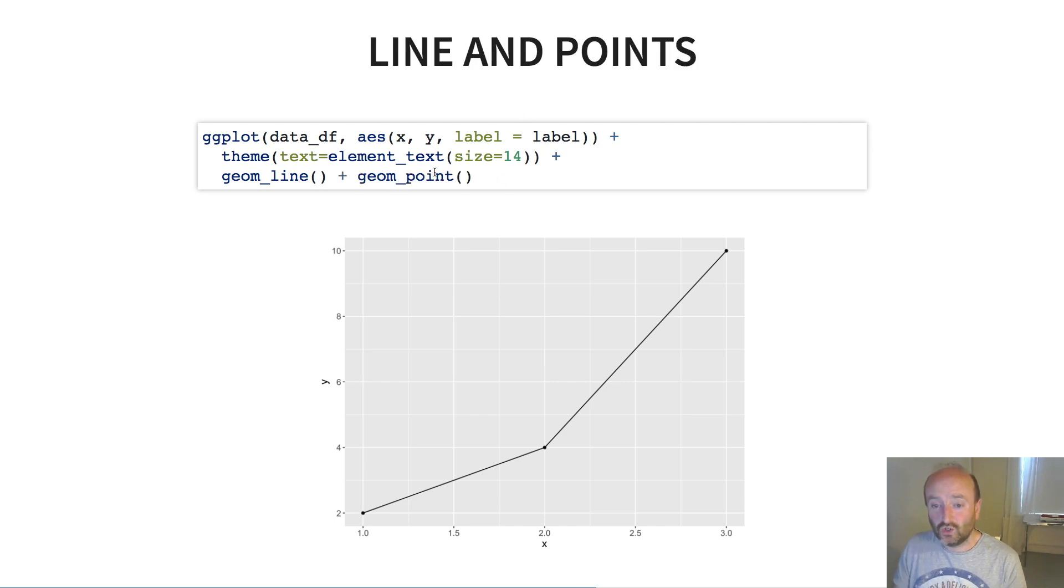I can also layer geoms. So I have geom_line, and then on top of that, I add geom_point. And so what we get here is we get a line for our points as well as the individual points themselves, which is produced by geom_point.